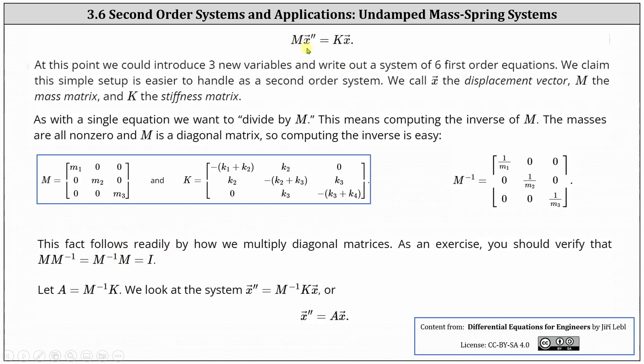And now with our equation M times X double prime equals K times X, we multiply both sides by M inverse, and let matrix A equal M inverse times K. And then we can write the system as X double prime equals A times X.